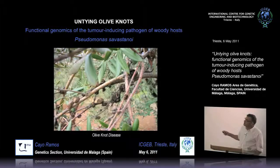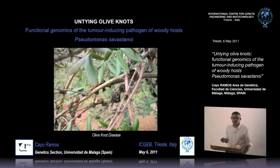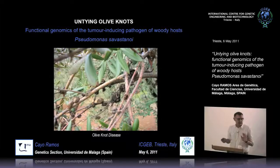The typical symptoms of the disease are shown in this picture taken from a naturally infected tree in the region of Malaga. They include the formation of tumors mainly on the stems and branches, and occasionally in very heavily infected trees, small tumors on the leaves or fruits, but this is very rare.